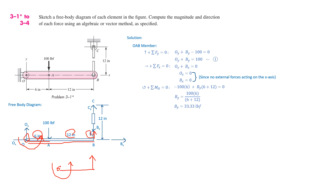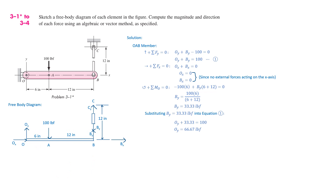If you want to know more about sum of forces and sum of moments, I have another video linked in the description below. Next, substituting By equals 33.33 LBF into equation 1, we get Oy plus 33.33 equals 100. Solving for Oy gives us Oy equals 66.67 LBF. So, Oy is 66.67 and By is 33.33.